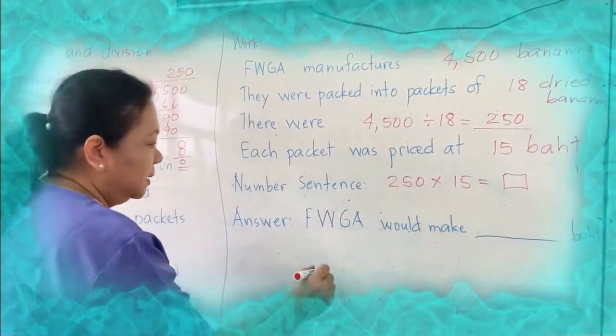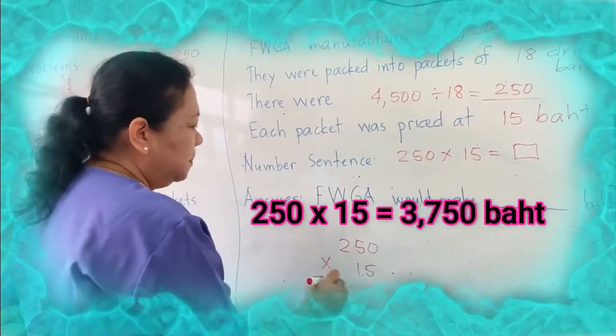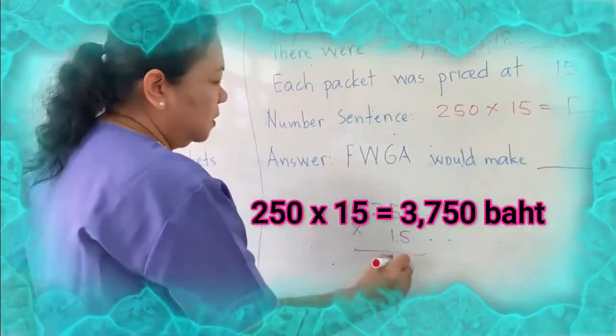Now we can get again another extra paper to multiply. 250 times 15.